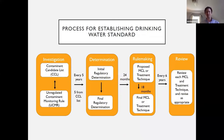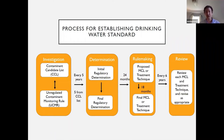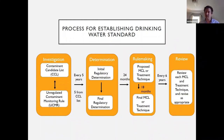Here's a more detailed description of the process for establishing drinking water standards, broken into four stages. First is the investigation stage for emerging contaminants; second is the determination stage — deciding whether to regulate or not; third is the rulemaking stage, actually creating those standards once there's been a determination to regulate; and fourth is the review phase, a requirement to review drinking water standards every six years. This is all laid out in the Safe Drinking Water Act with strict timelines, driven by that massive outbreak in Milwaukee.